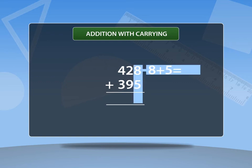Starting from ones place, 8 plus 5 is equal to 13. Send 1 as carry to tens place and bring down 3.